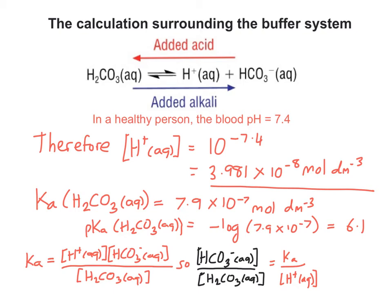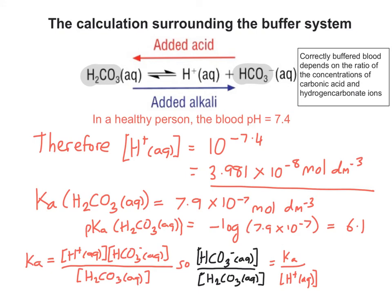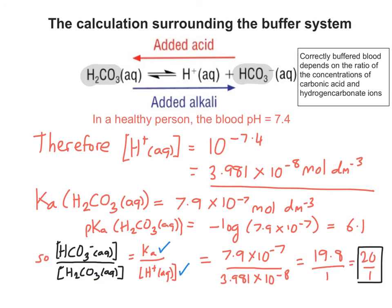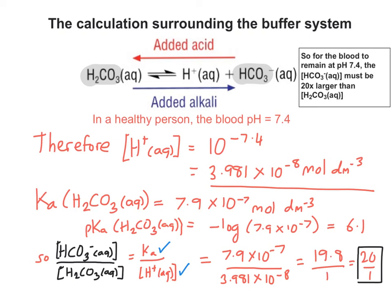If we highlight the correct ratio — HCO3- concentration divided by H2CO3 concentration — in other words the correct ratio of hydrogen carbonate ions to carbonic acid, remembering that correctly buffered blood is dependent on that ratio, we can say that the ratio is equal to the Ka value over the concentration of H+, both of which we already have. Putting those numbers in gives us 20 divided by 1, meaning that for the blood to remain at pH 7.4, the hydrogen carbonate ion concentration must be 20 times bigger than the concentration of carbonic acid.